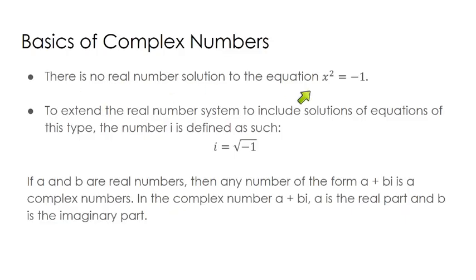we understand there's no real number solution to the equation x squared equals negative 1. Because think about it, whenever you square a number, if I squared 5, I would get a positive 25, but if I squared a negative 5, a negative times a negative is also a positive.